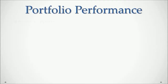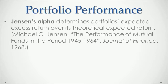The third performance metric is Jensen's Alpha, which determines the portfolio's expected excess return over its theoretical expected return. For a full reference, I recommend that you read Michael Jensen's 'The Performance of Mutual Firms in the period of 1945 to 1964,' published in the Journal of Finance in 1968.